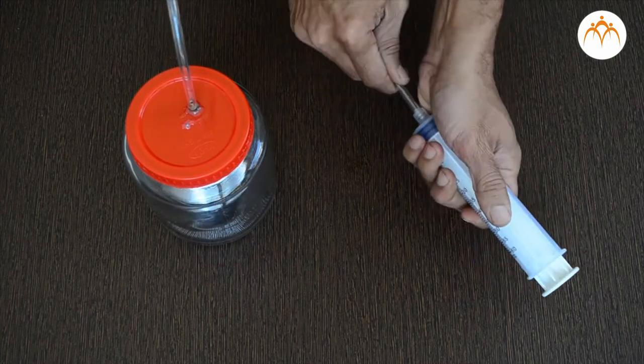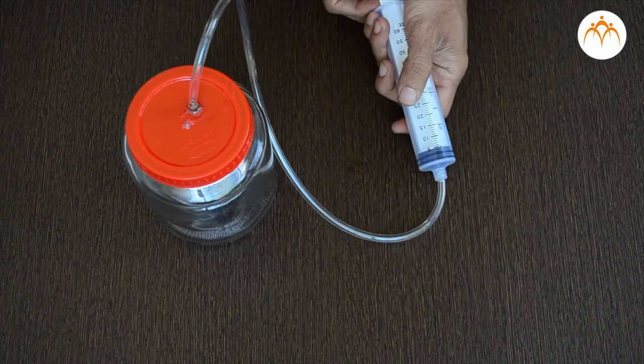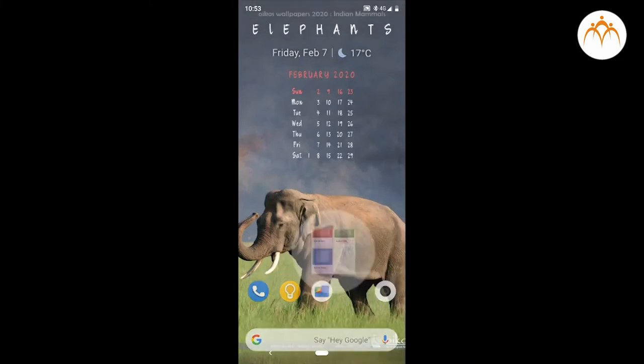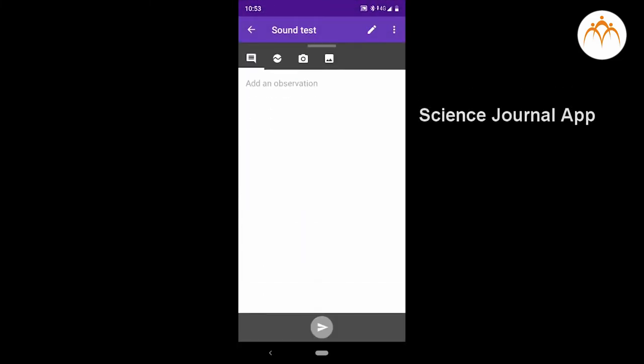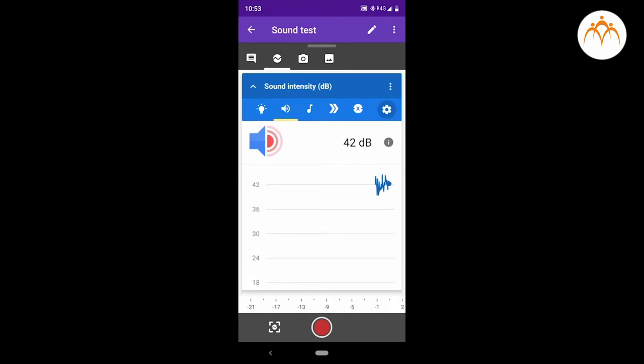It is not very easy to sense the change in intensity of the sound. We will use the sound meter of the Science Journal app to measure the intensity of sound. Note that we see change in amplitude or intensity of the sound as we create partial vacuum.